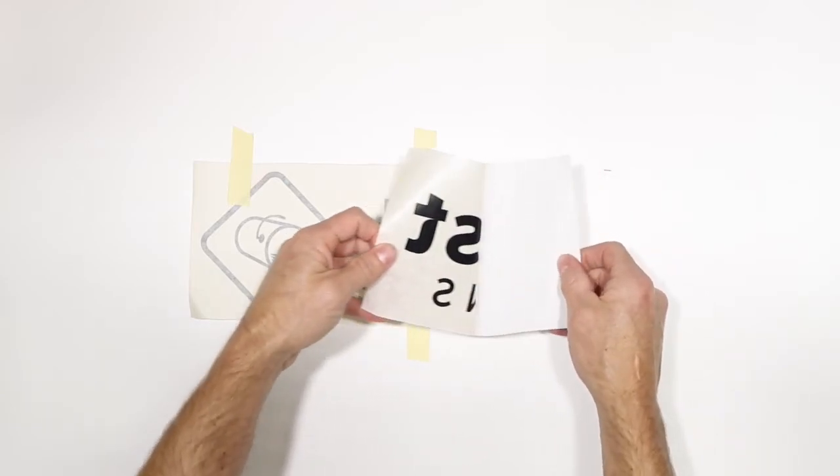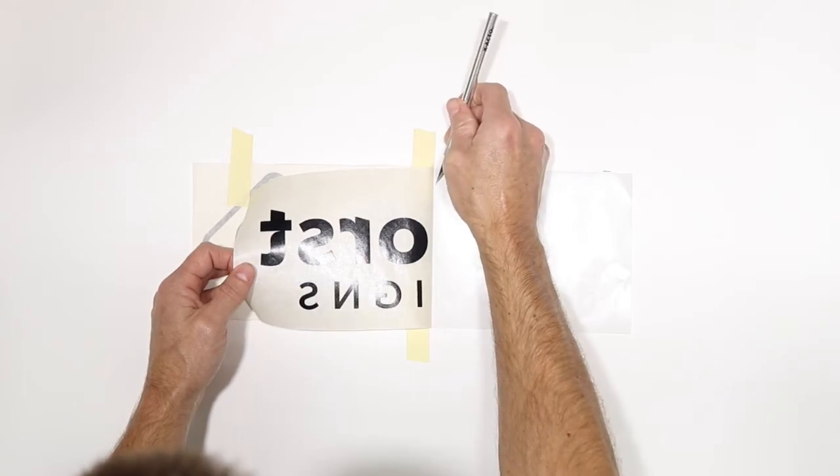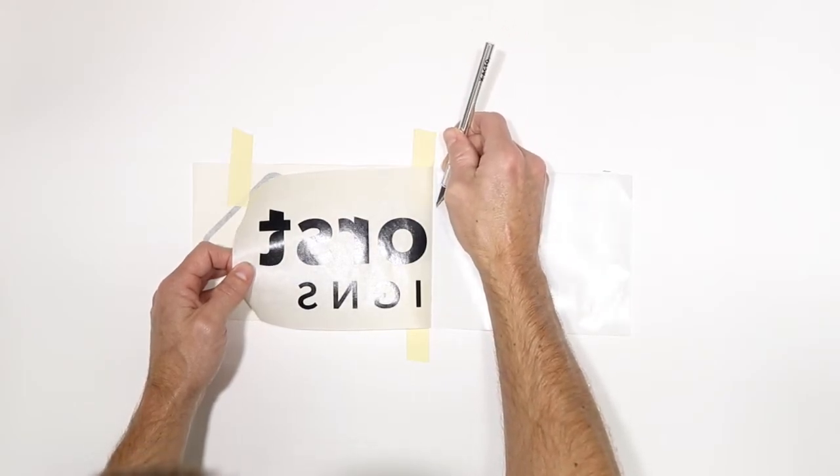Peel away the backer material until you reach the center. Use a knife to cut the backer material, ensuring that only the backer is cut and not the decal.